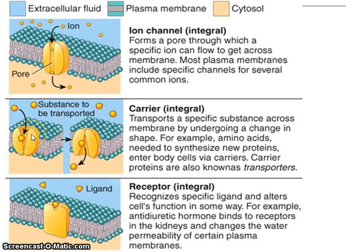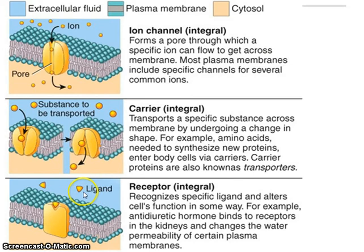Another type is the carrier protein, which is a similar idea, but here the carrier has to change shape to transport different molecules across the membrane. Third, we've got receptor proteins. An example is when dealing with hormones — a hormone acts like a ligand, something that binds. It moves through the blood looking for its receptor, where it can bind and make a change inside the cell.